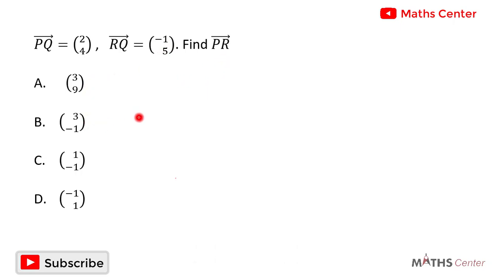This is a multiple choice question, so we will solve the question and then pick the correct option. The three points here are point P, point Q, and point R.